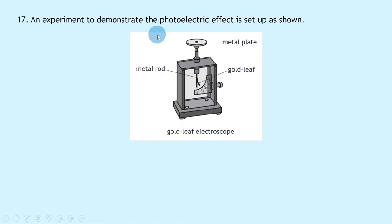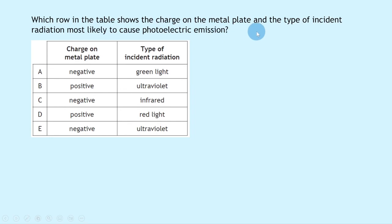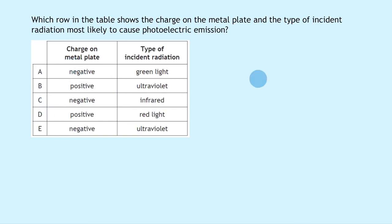Question 17 asks about the photoelectric effect using a gold leaf electroscope. For the electroscope to demonstrate photoelectric emission — electrons being ejected from the metal surface — the metal plate must be negatively charged. This narrows it to options A, C, and E. The frequency of the incident radiation must also exceed the threshold frequency, and for a gold leaf electroscope that means ultraviolet light. The answer is E: negatively charged plate with ultraviolet radiation.